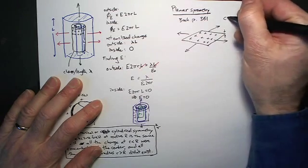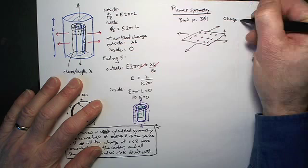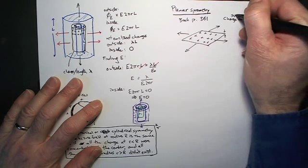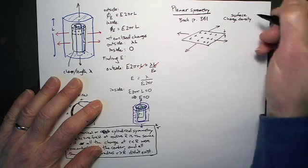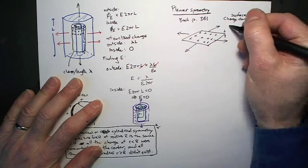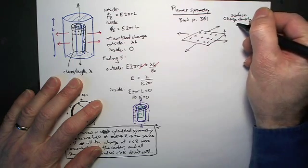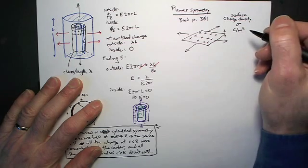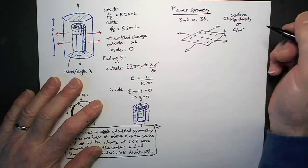And the charge density, we call it sometimes the surface charge density. And the symbol that is always used to represent surface charge density is the Greek letter sigma. And it would have units of coulombs per meter squared.